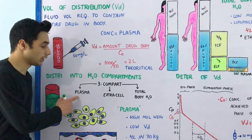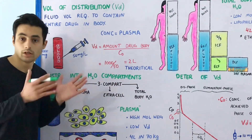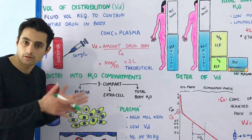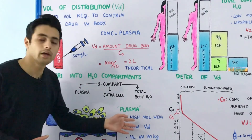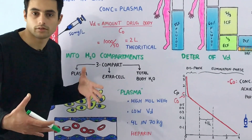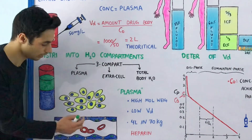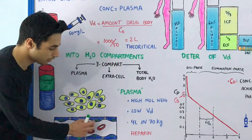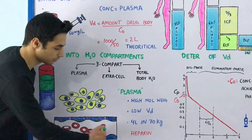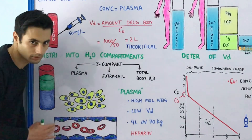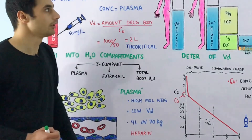Now we are ready to discuss how the drug is distributed into various water compartments. The drug can be distributed in your plasma, in the extracellular fluid, or in all of the water compartments. Drugs distributed only in the plasma have high molecular weight and large sizes, so they cannot cross the endothelial cells to reach the interstitial or intracellular fluid. The example is heparin — its volume of distribution is about 4 liters in a 70 kg man.